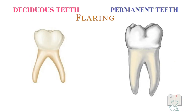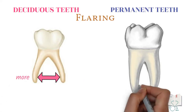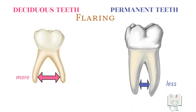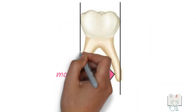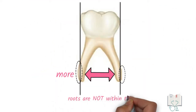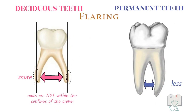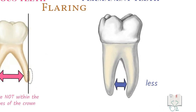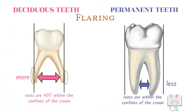Among multi-rooted teeth, the roots in deciduous teeth show more flaring than in permanent teeth, such that if we draw lines tangential to the crown surfaces, the roots do not lie within the confines of the crown. However, in permanent teeth, the roots lie within the confines of the crown.